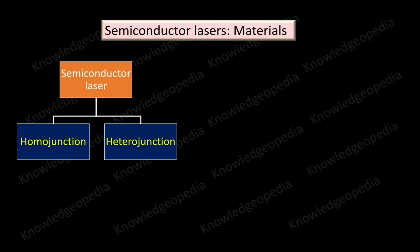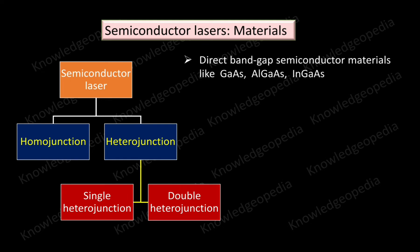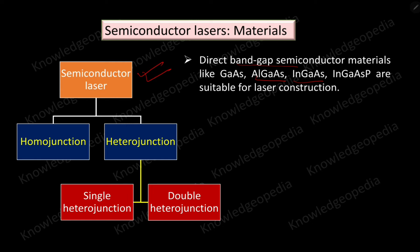Semiconductor lasers are of two types: homojunction and heterojunction. Further, heterojunctions are of two types — single heterojunction and double heterojunction. Whatever the type, the materials suitable for making a semiconductor laser are direct bandgap materials, for example gallium arsenide, aluminum gallium arsenide, and indium gallium arsenide. Why these direct bandgap semiconductors are suitable has already been discussed in the last two videos.